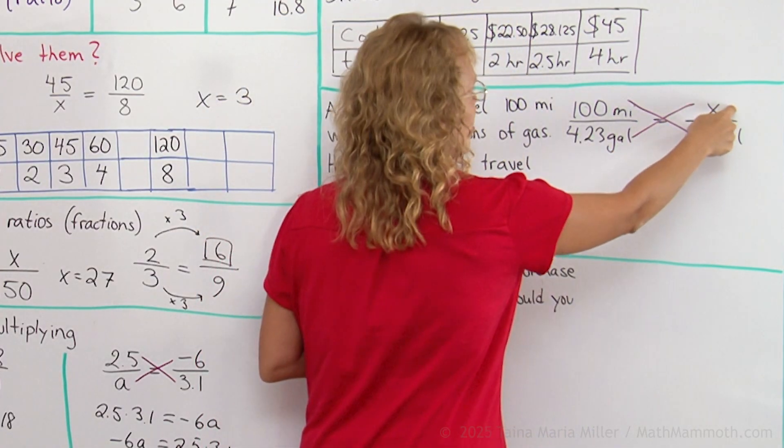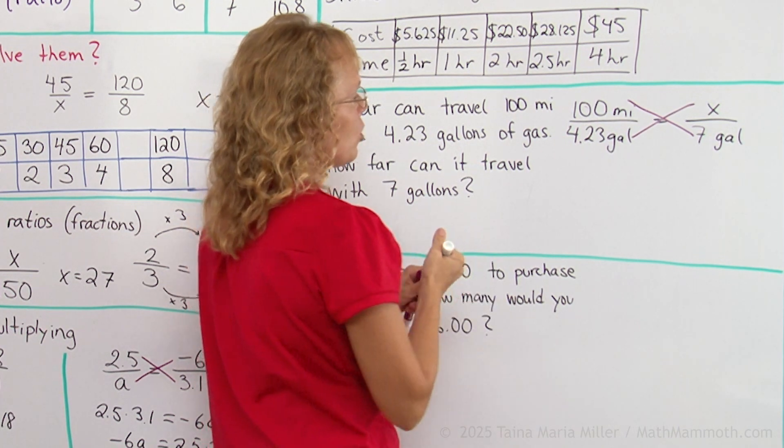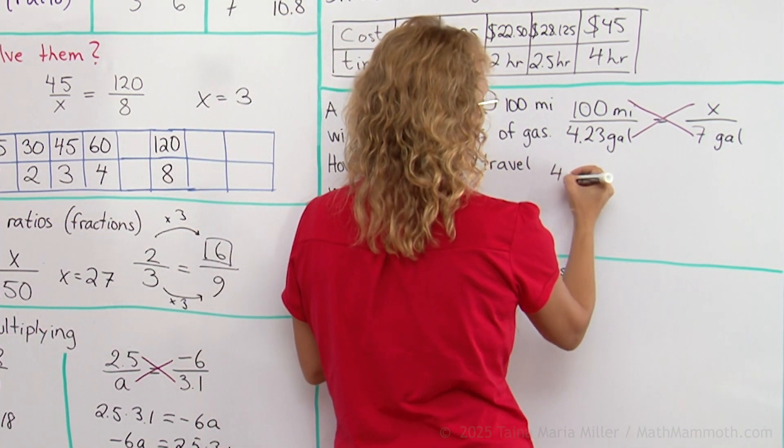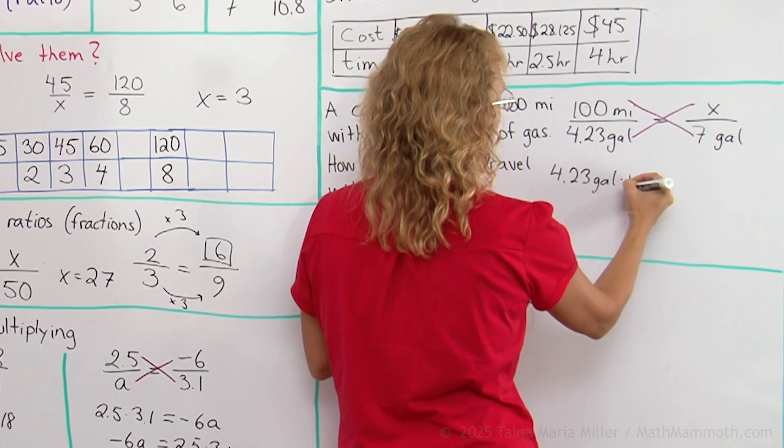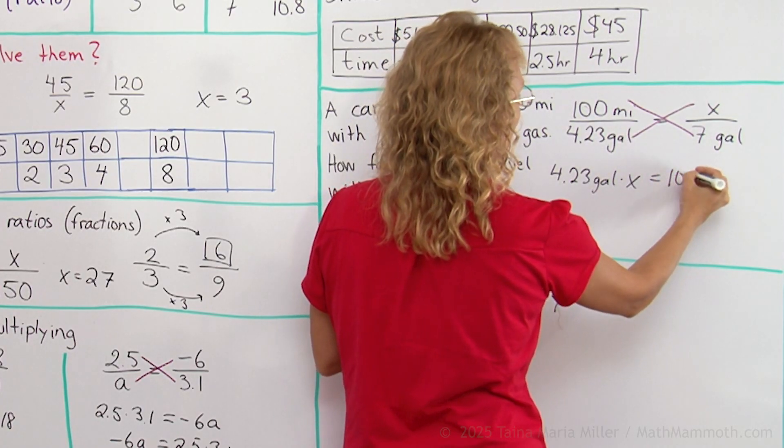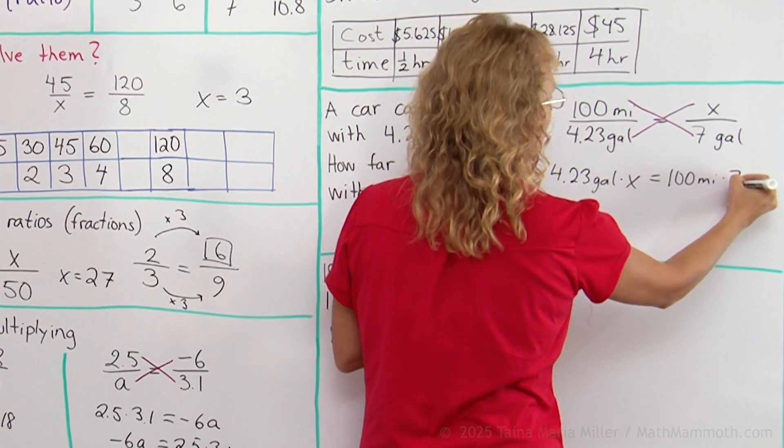My unknown gets multiplied by 4.23, so I will get 4.23 gallons times x, and on this side 100 miles times 7 gallons.